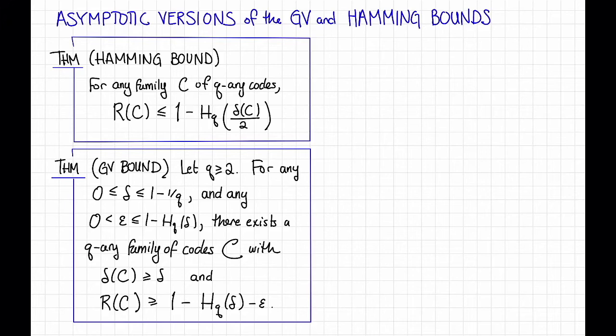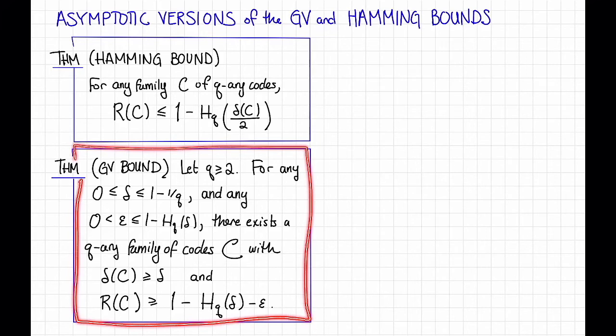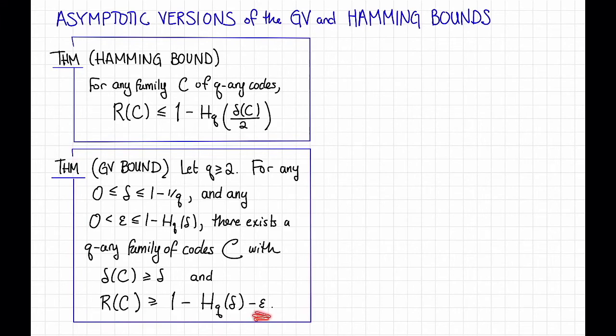We can do the same thing for the Gilbert-Varshamov bound, and one thing we could get is the following. Let q ≥ 2. Then for any δ between 0 and 1 - 1/q, and any ε between 0 and 1 - H_q(δ), there exists a q-ary family of codes C with relative distance at least δ and rate at least 1 - H_q(δ) - ε. Here, this ε is kind of a fudge factor. It's going to come out in the length of the code. That is, the smaller ε is, the larger the block length of the code needs to be before this starts being true.